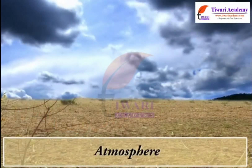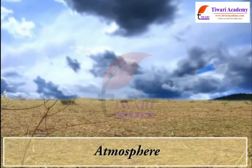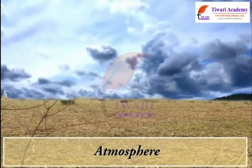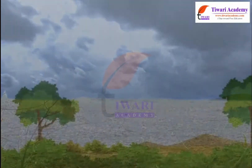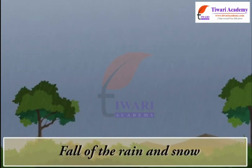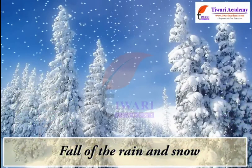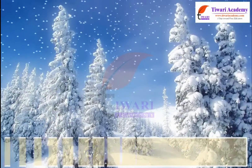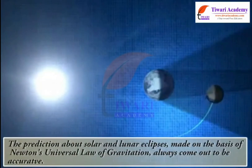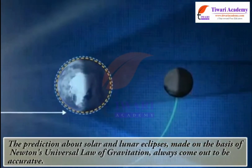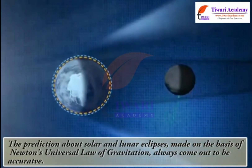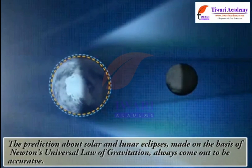It is the gravitational pull of the earth which is responsible for holding the atmosphere near the surface of the earth. It is the gravitational pull of the earth which is responsible for the fall of rain and snow towards the surface of the earth. The predictions about solar and lunar eclipses made on the basis of Newton's universal law of gravitation always come out to be accurate.